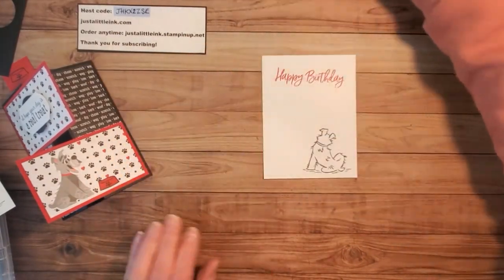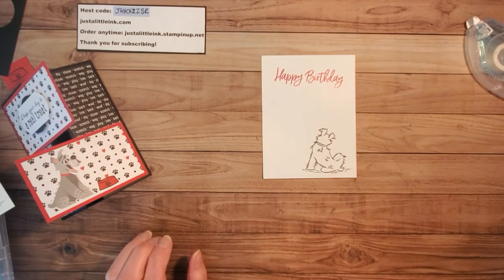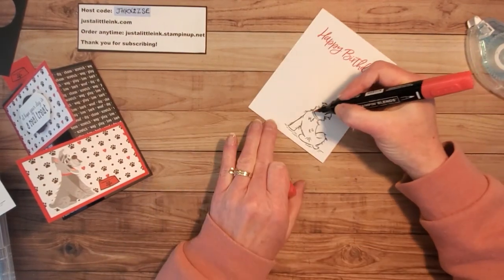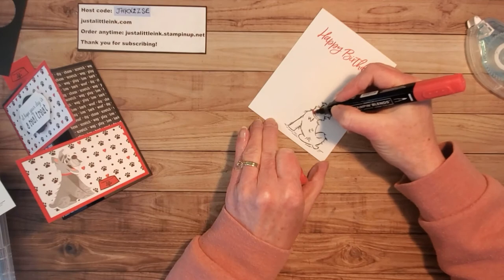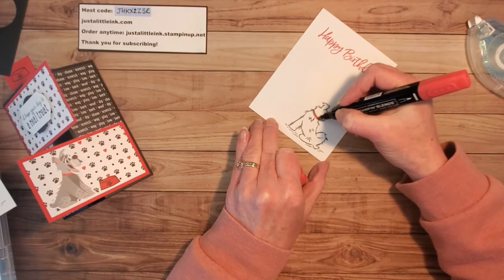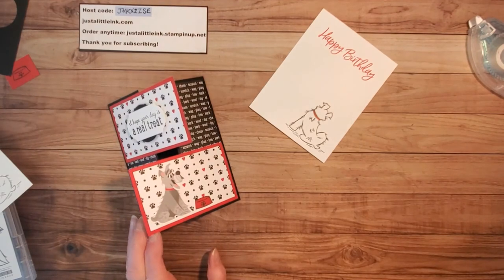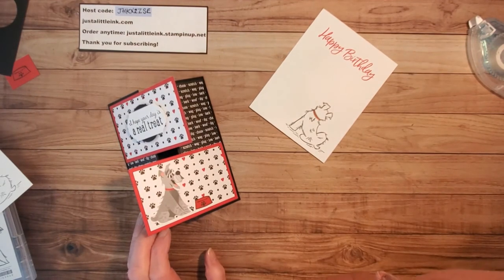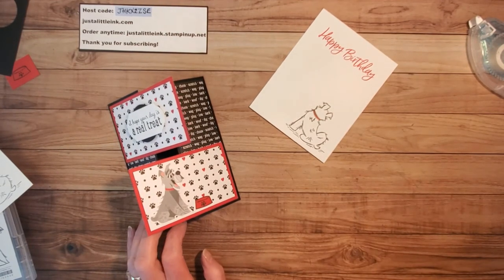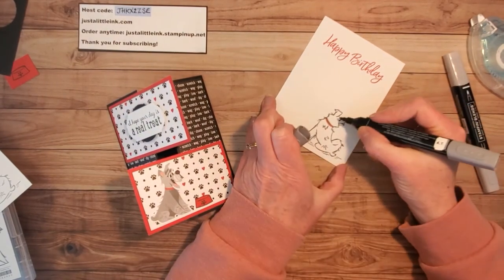And then I'm going to color him in. I'm going to use the Real Red Stampin' Blends. I'm just using the dark, match the color that I have on the front. And then I'm going to use my Smoky Slate Blends to come in.